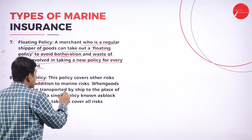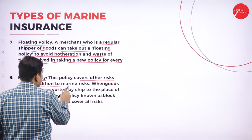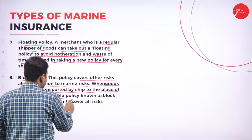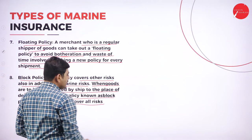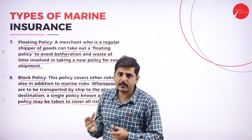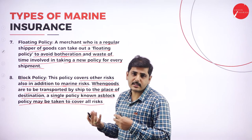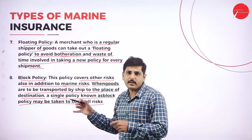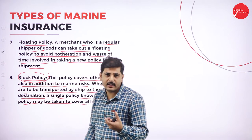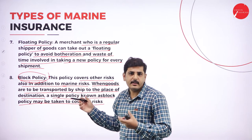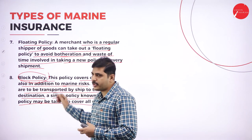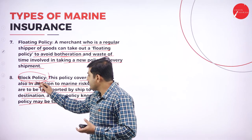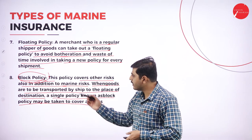Block policy covers other risks in addition to marine risk. When goods are transported by ship to the destination, a single block policy may be taken to cover all risks. For example, during transportation in the ocean, if fire catches the goods, this policy covers that fire insurance as well. Block policy covers not only marine risks but also fire, theft, strike, and other different types of losses in the business.